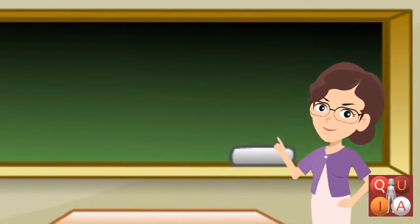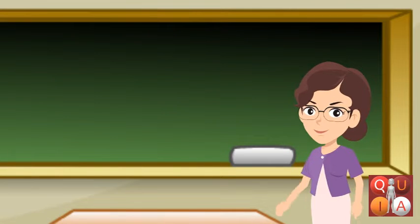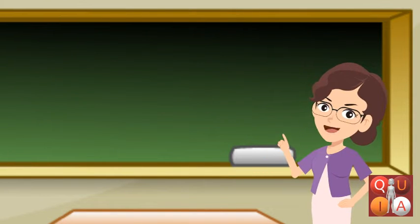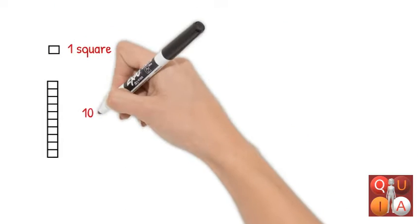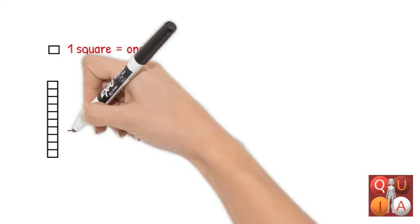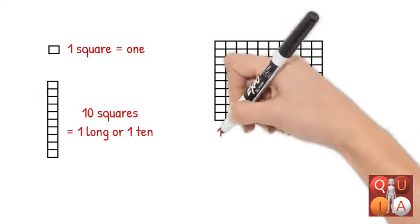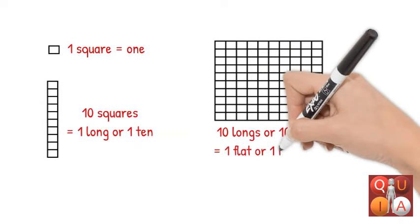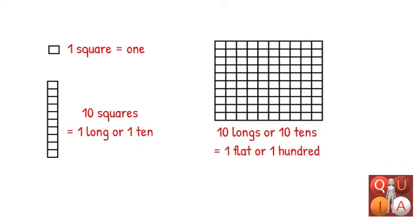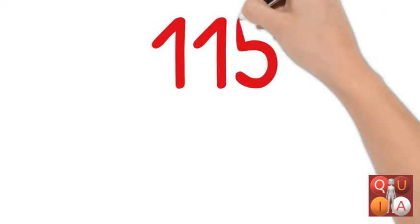Now we will be illustrating numbers with flats, longs, and squares. 1 square is equal to 1. 10 squares is equal to 1 long, or 1 ten. 10 longs or 10 tens is equal to 1 flat, or 100. Let us illustrate the number 115.